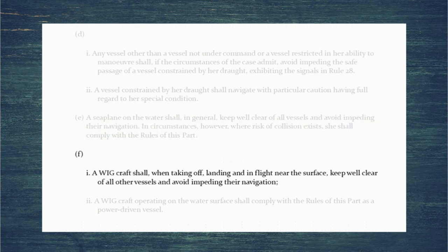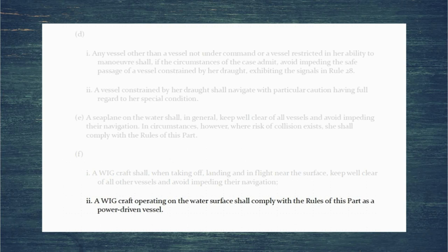Paragraph F says a wing-in-ground craft taking off, landing, or in flight needs to keep well clear of all other vessels. This makes sense because a wing-in-ground craft travels at incredible speed and other vessels wouldn't be able to react in time. However, when it's only operating on the water's surface it needs to comply with the rules as a power-driven vessel — again it's propelled by machinery, so that makes complete sense.